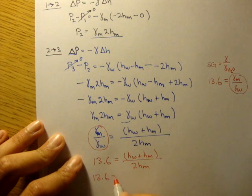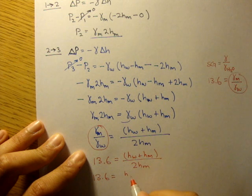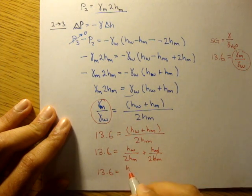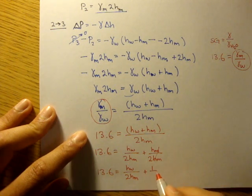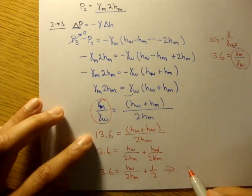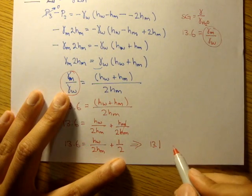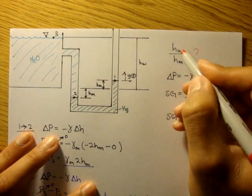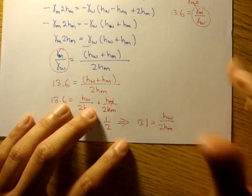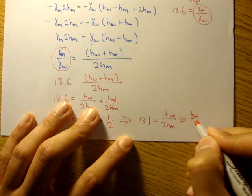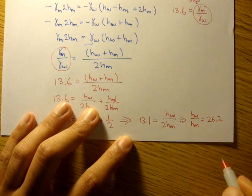Let's simplify further by splitting the fraction: H of water over 2HM plus H of M over 2HM. Here the HM's cancel on the second term, giving one half. So 13.6 equals H of water over 2H of M plus one half. Subtracting one half from both sides gives 13.1 equals H of water over 2H of M. Our question asks for the ratio of height of water over height of mercury, so multiplying by 2 gives H of water over H of M equals 26.2. And that's our answer.